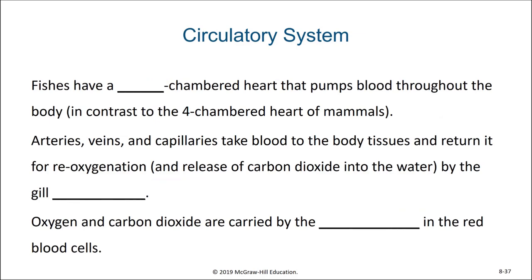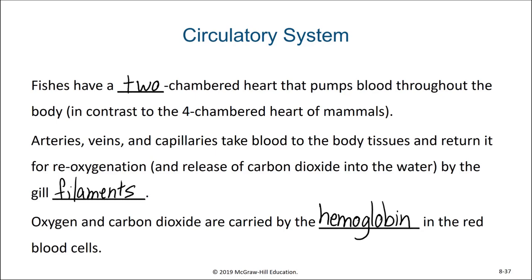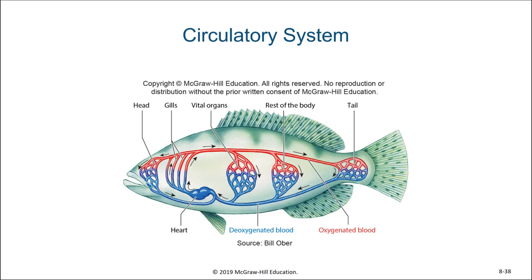Fishes have a two-chambered heart. This pumps blood throughout the body in contrast to the four-chambered heart of mammals and birds. Arteries, veins, and capillaries take blood to the body tissues and return it for re-oxygenation and release of carbon dioxide into the water by the gill filaments. Oxygen and carbon dioxide are carried by the hemoglobin in the red blood cells. Unlike the two circuits of blood flow seen in mammals, fish have only a single circuit of blood flow, where oxygenated blood from the gills travels to the rest of the body, gas exchange occurs, deoxygenated blood returns to the heart, and the heart sends that blood back to the gills to repeat the process.